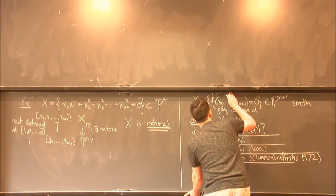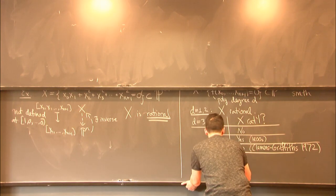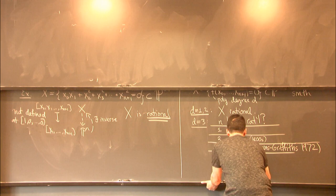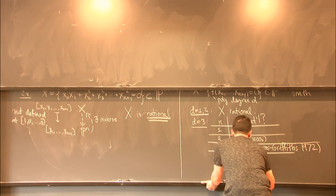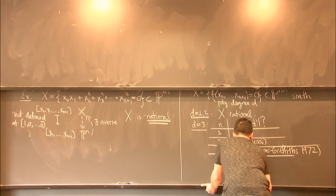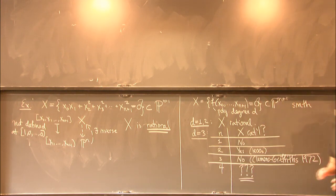And then when you get to n equals 4, you're already sort of at the boundary of what we know. So I'll just write some question marks here. So we do know a little bit. So what I can say that we know is there are some x's which are rational when n is 4. There are no known examples of irrational x's, although we expect a generic one is irrational. So there's a lot of mystery still in this case.